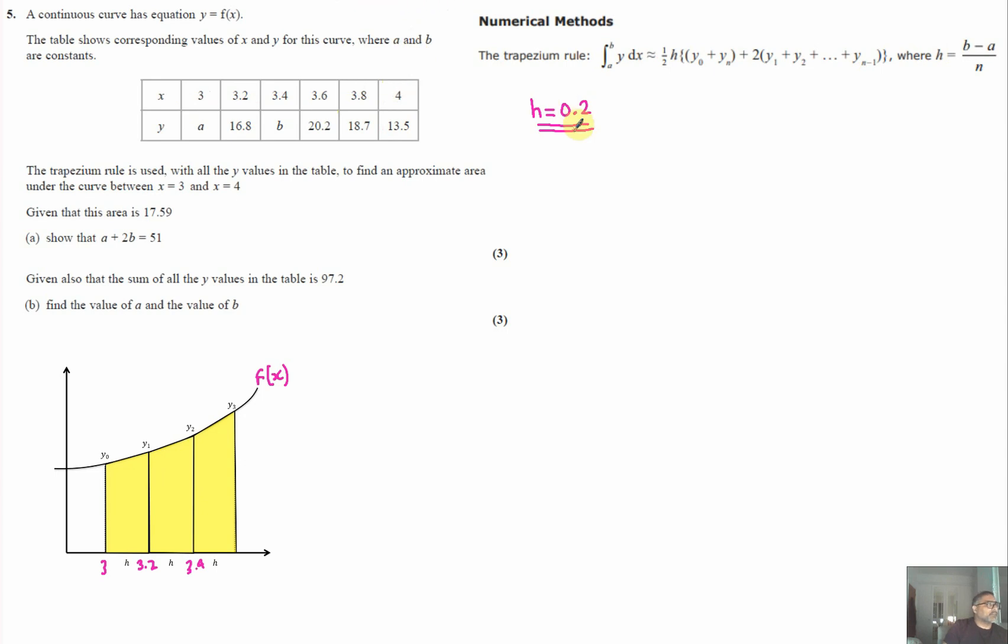We know the area is 17.59. Using the formula, it's 0.2 over 2 for half h, times the first and last y values (a and 13.5), plus two times all the middle values.